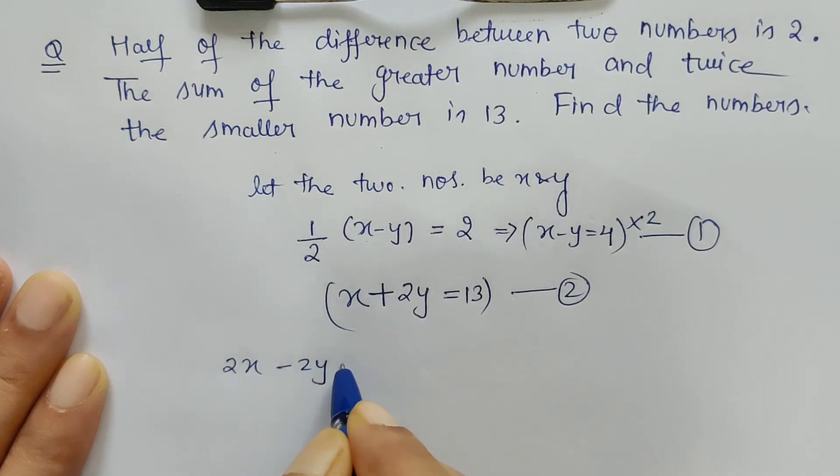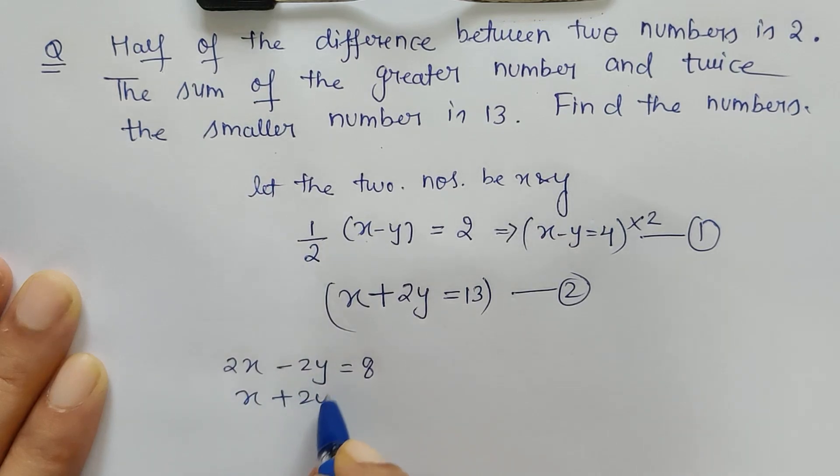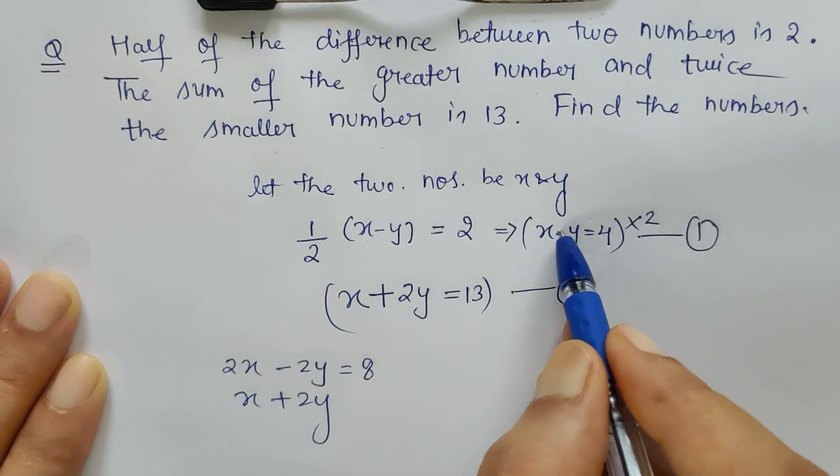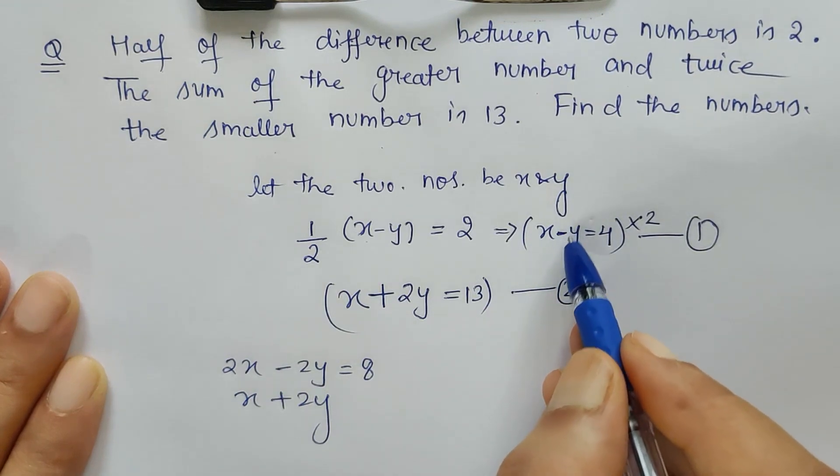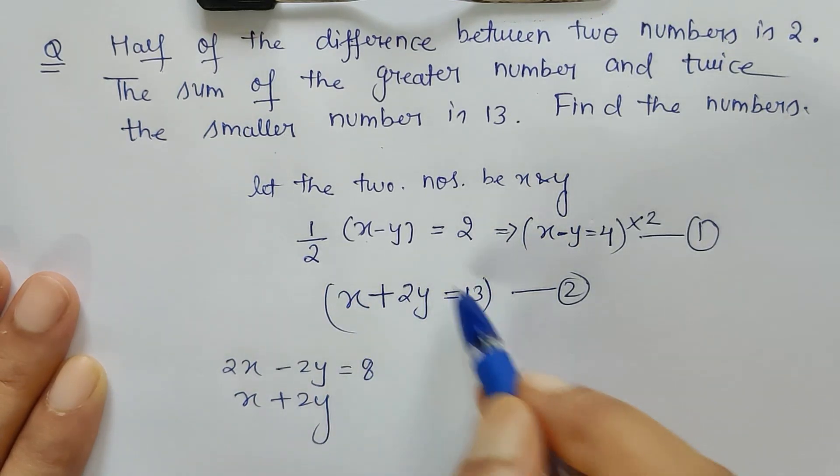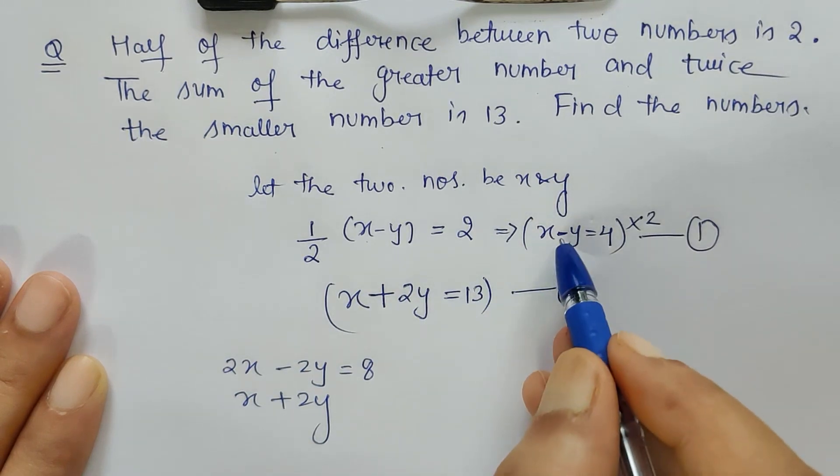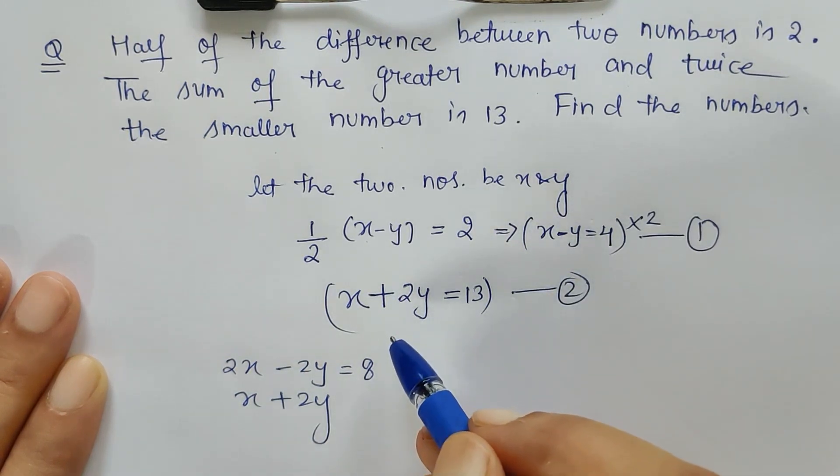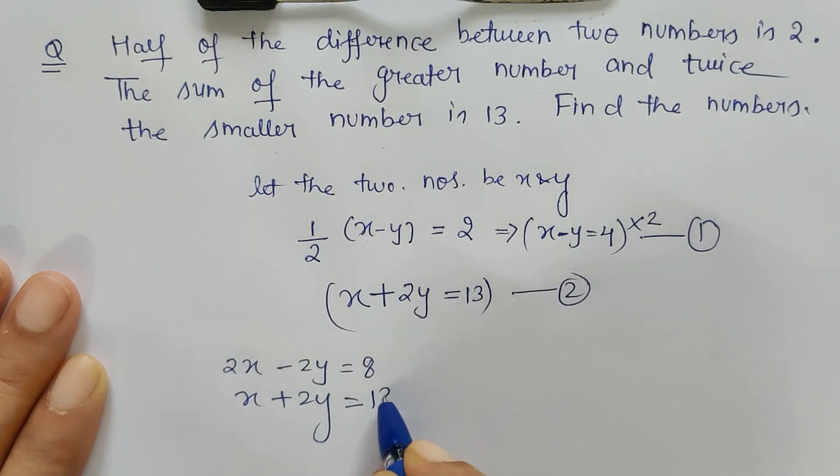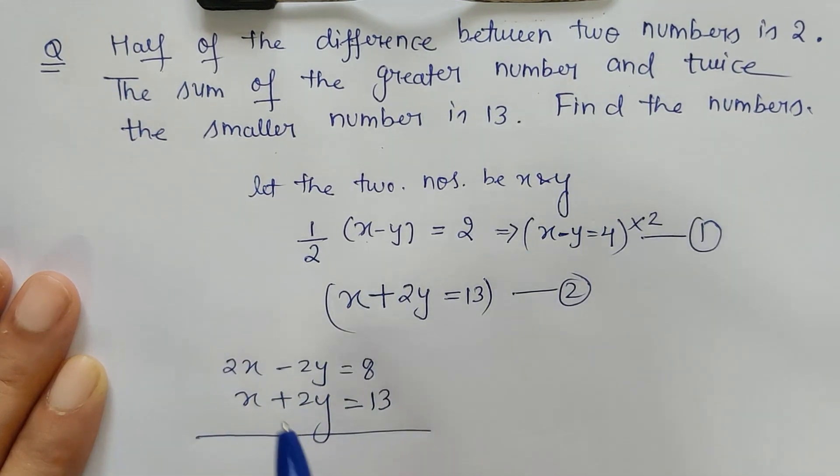So I'll get the newly formed equation which is 2x minus 2y is equal to 8, and this as it is: x plus 2y. It is as it is because here the coefficient of y is minus 1, we are taking only 1 to multiply all the terms of the second equation, so it remains as it is. And I am not changing the sign because it will be easy for us to subtract.